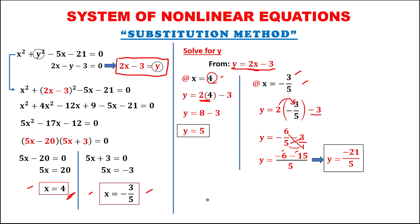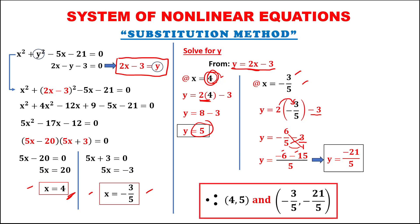Therefore, the solution sets are: x equals 4 and y equals 5, giving the ordered pair (4, 5), and x equals negative 3 over 5 and y equals negative 21 over 5.